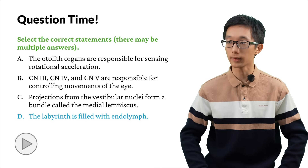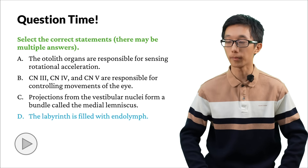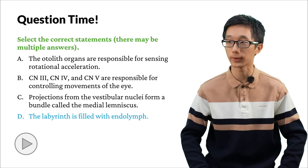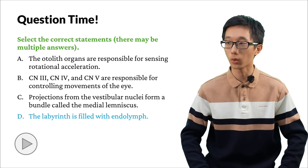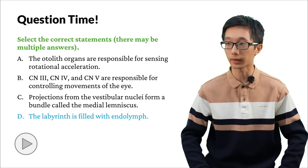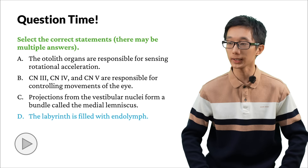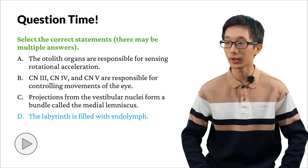The only correct answer is D. A is incorrect because the otolith organs are responsible for sensing linear acceleration, while the semicircular canals are actually responsible for rotational acceleration. For B, cranial nerves 3, 4, and 6 are responsible for controlling eye movements — cranial nerve 5 is not involved. C is incorrect because the bundle is called the medial longitudinal fasciculus, not the medial lemniscus. We will explore the medial lemniscus in future episodes about somatosensation. And finally, D is correct: the labyrinth is filled with endolymph, which has low sodium concentration and high potassium concentration.